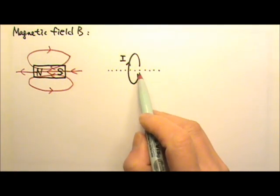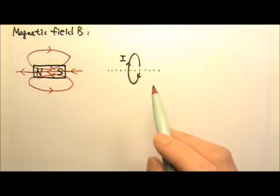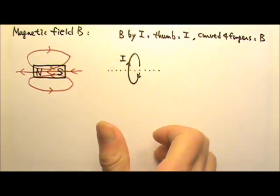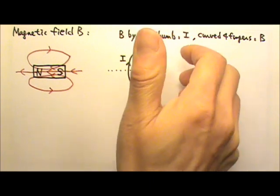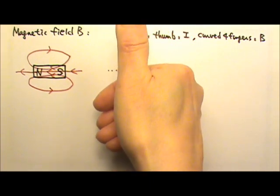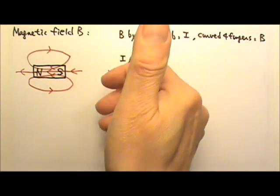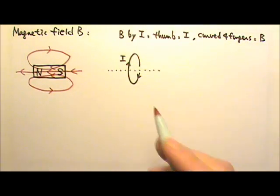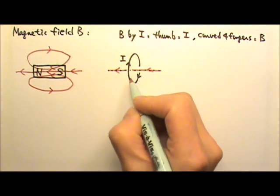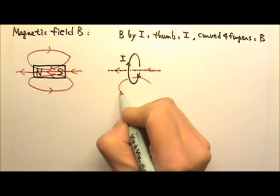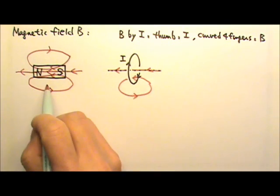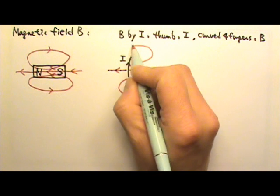As for the magnetic field produced by a current, we can use the right-hand rule. If we use our thumb to follow the current, the curved four fingers will give us the direction of the magnetic field. So the thumb points in the direction of the current, and the four fingers go to the left. So inside this current loop, the magnetic field lines will go to the left, and the field lines will look just like the field lines produced by a magnet.